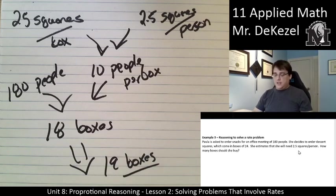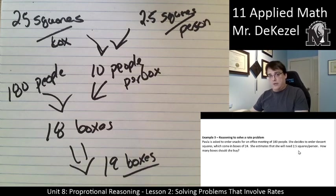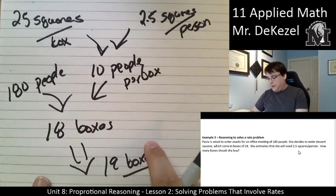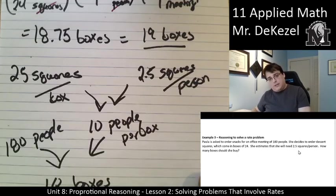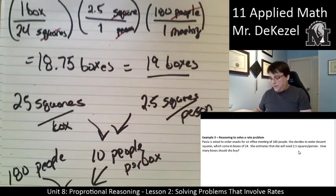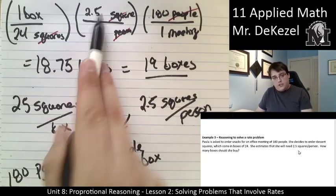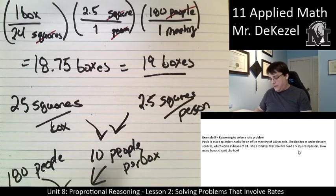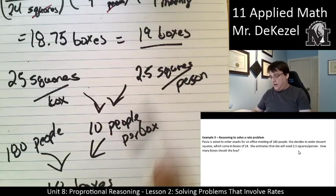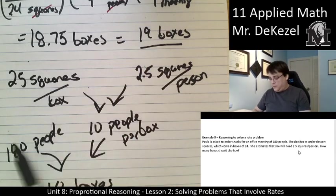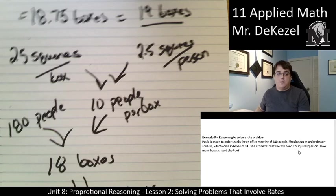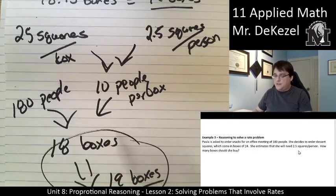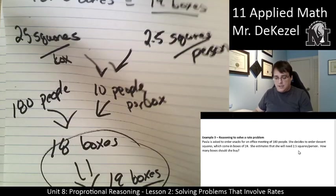So, there's a couple of ways you can do this. You can do it the mathy way. Up top, you can do it kind of the reasoning way. As long as you explain your thinking. And if we actually look back to compare them, these are the same thing. We've got 24 and 2.5 here doing the same thing. 25 and 2.5 here. Finding out how many per box and multiplying it by 180. Finding out how many boxes we're going to need for 180 people. We kind of did the same thing, but in a little bit of a different way. And got the same answer. 18 to 19 boxes.